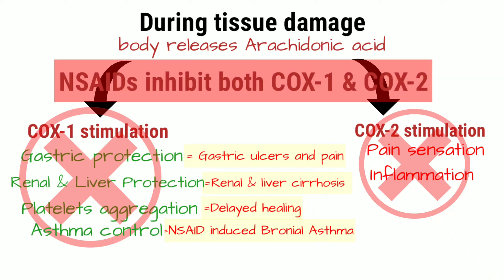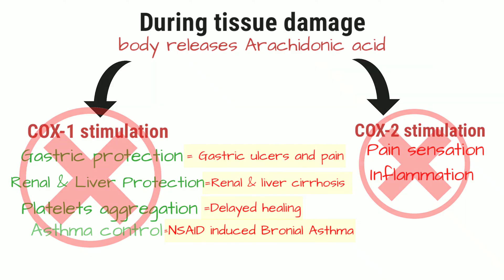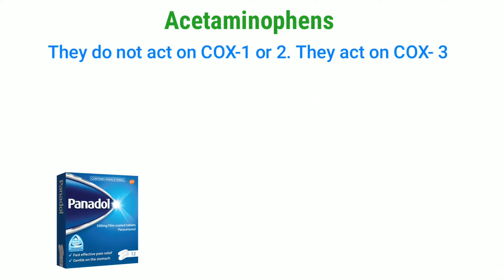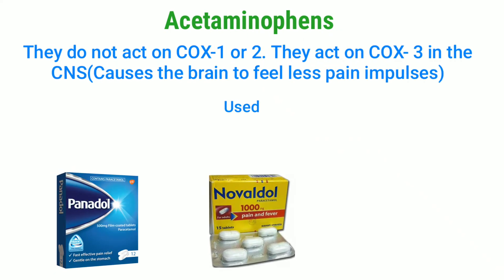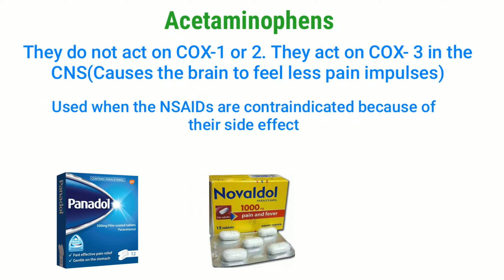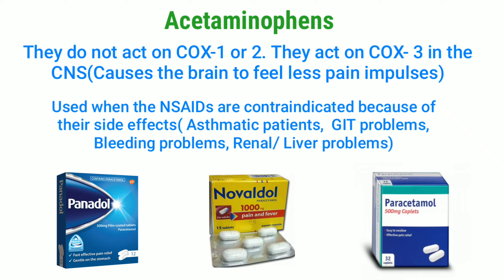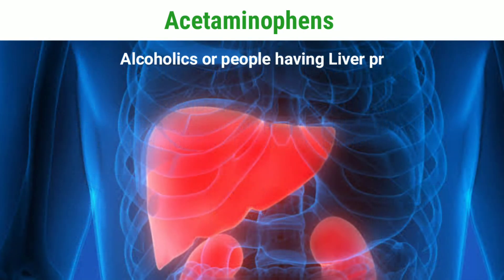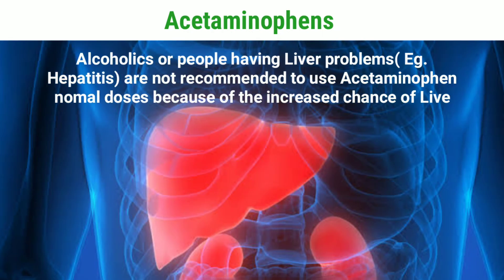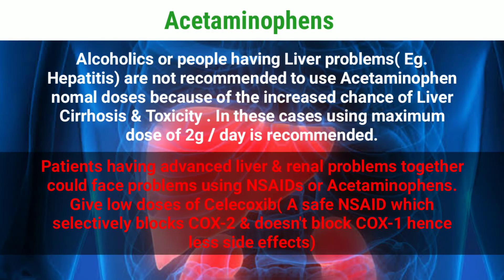Giving NSAIDs is contraindicated in these conditions. Patients with these conditions are recommended to be given acetaminophen instead. These drugs do not inhibit COX-1 or COX-2; they inhibit COX-3 inside the CNS, which gives an analgesic and antipyretic effect. They can be given to patients with gastric ulcers, bleeding, or those taking anticoagulants when NSAIDs are contraindicated. The most famous example is Panadol. However, consuming too much of this drug can cause a serious side effect: liver failure.